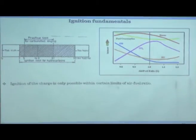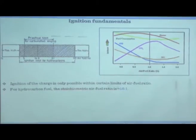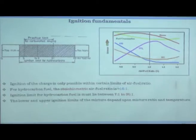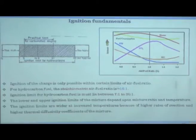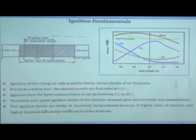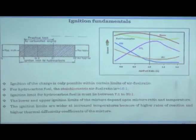Ignition of the charge is only possible within certain limits of air-fuel ratio; stoichiometric is about 14.5 to 15. The ignition limit for hydrocarbons must lie between 7 and 30. The lower and upper ignition limits depend on mixture ratio and temperature. The ignition limits are wider at increased temperature, and inside the engine we always have higher temperature, so the air-fuel ratio limits are wider because of higher reaction rates and higher thermal diffusivity of the mixture constituents.